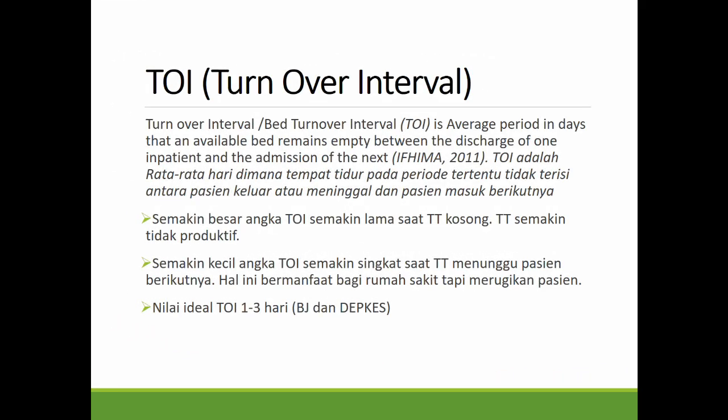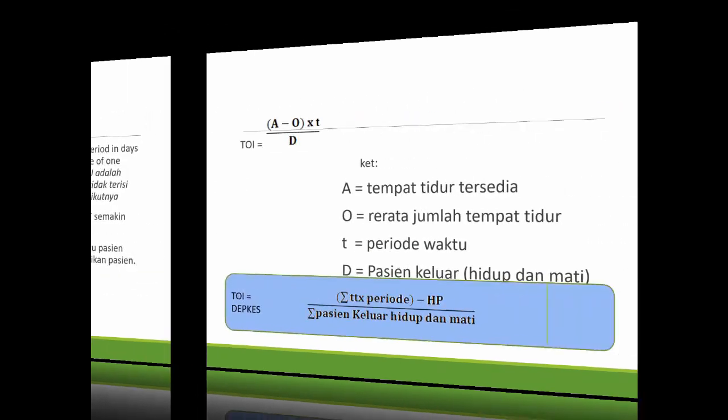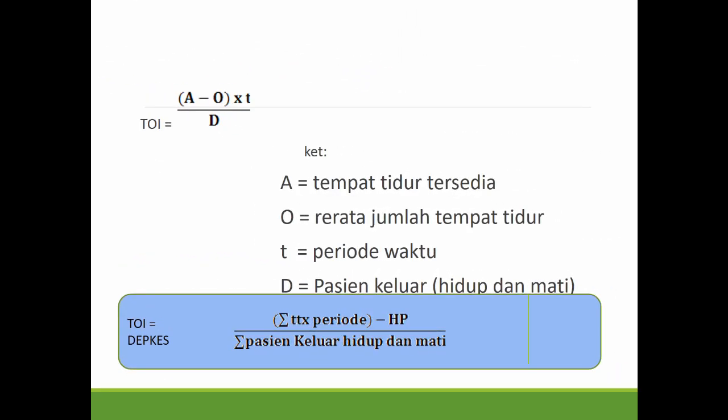TOI atau Turnover Interval: semakin besar angka TOI, semakin lama tempat tidur kosong, semakin tidak produktif. Semakin kecil angka TOI, semakin singkat tempat tidur menunggu pasien berikutnya. Nilai ideal adalah 1-3 hari. Tempat tidur setelah digunakan, seminimal mungkin dikosongkan 1 hari dulu. Rumus TOI menurut BG: (A - O) × T / D. A adalah tempat tidur tersedia, O adalah rata-rata jumlah tempat tidur, T adalah periode waktu, D adalah pasien keluar hidup dan mati. Untuk Depkes: (TT × periode - HP) ÷ jumlah pasien keluar hidup dan mati.